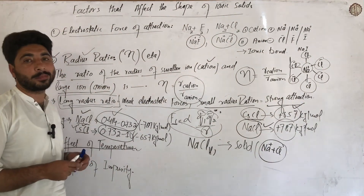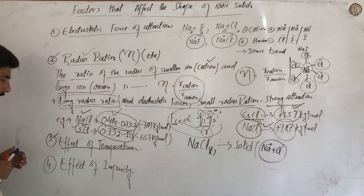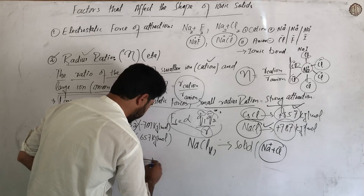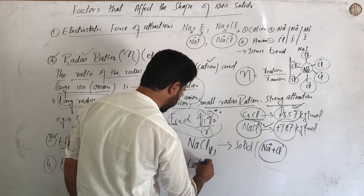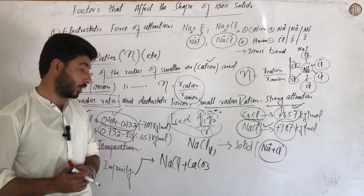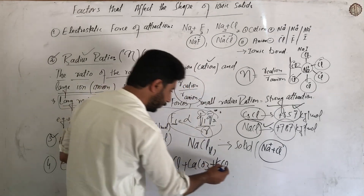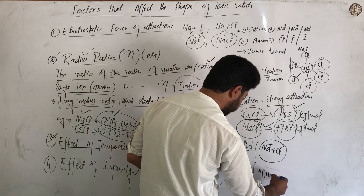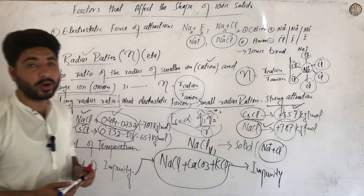The fourth factor is impurity. Impurity has an effect on the shape of ionic solids. For example, if CaCO3 or KCl is mixed with NaCl as an impurity, the mixture forms a different arrangement. When these impurities - CaCO3, KCl - are mixed with sodium chloride, they change the ionic shape because the different ions disrupt the regular crystal arrangement.